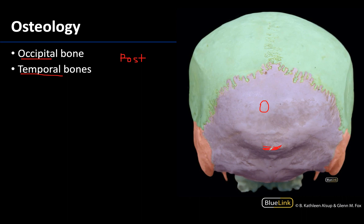The occipital bone has a very long name so we're going to save that for later, but I always try to locate that bump to get my bearings. The occipital bone is unpaired, meaning there is only one occipital bone. There are not matching bones on each side, unlike the paired parietal bones shaded in green and your paired temporal bones. When looking at a posterior view you can only see a small portion of the temporal bones, mainly your mastoid process and this small styloid process, which we'll talk about in a subsequent slide.